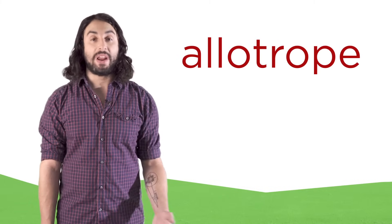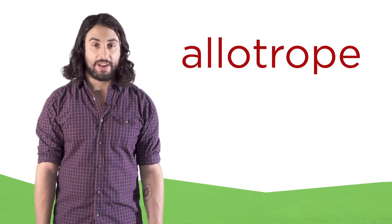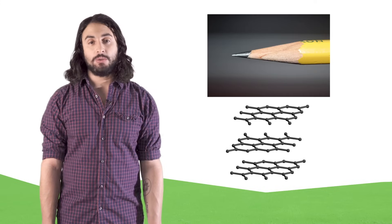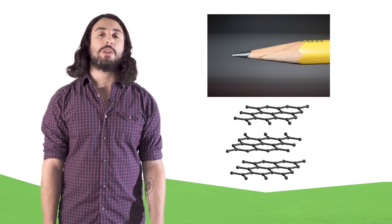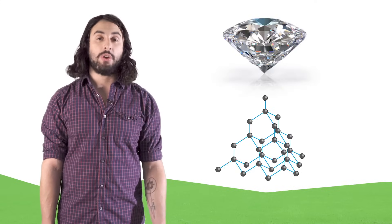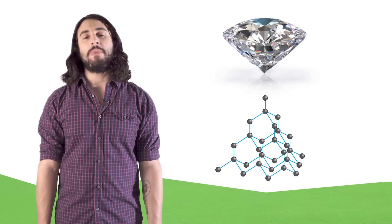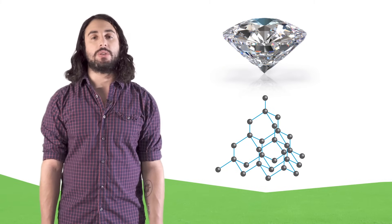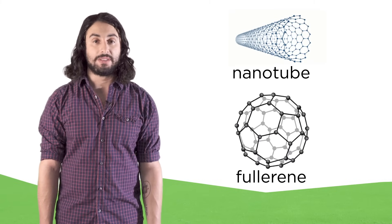Also, carbon-carbon bonds are strong enough to be stable, but not so strong that they can't break and rearrange, which makes them excellent building blocks. When by itself, carbon has many allotropes, or ways an element can be arranged. There's the graphite in your pencil, which consists of slippery sheets of carbon that rub off easily. There's diamond, the hardest substance known, and we can even make interesting structures like nanotubes and fullerenes.